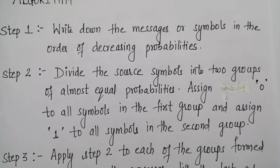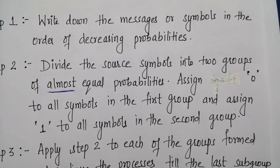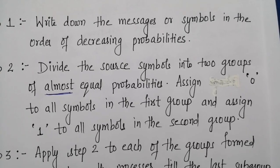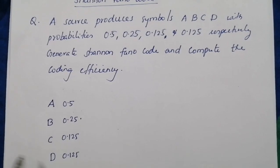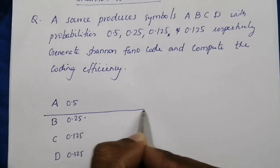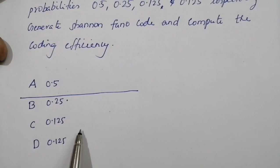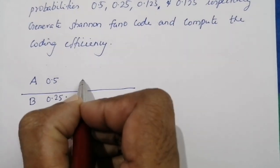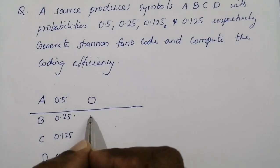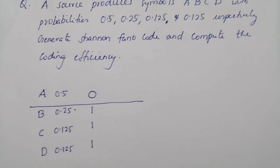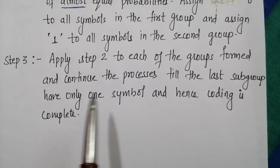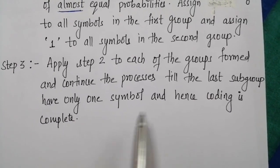By Step 2, divide the source symbols into two groups of almost equal probability. Take note of the phrase 'almost equal probabilities.' We draw a line to divide the symbols: the first group contains A (probability 0.5) and the second group contains B, C, D. Assign code 0 to all symbols in the first group and code 1 to all symbols in the second group. Then apply Step 2 to each group and continue until each subgroup has only one symbol.